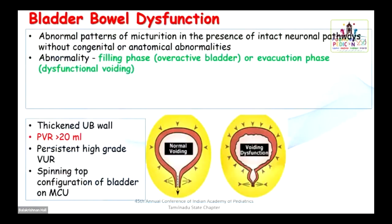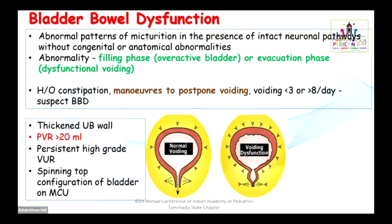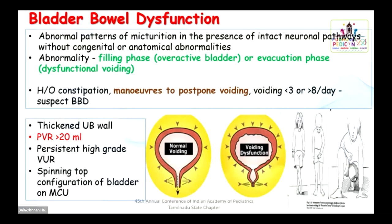A word about bladder-bowel dysfunction (BBD): It is an abnormal pattern of maturation in the presence of intact neuronal pathways without congenital or anatomical abnormalities. It can occur in the filling phase (overactive bladder with frequent urination) or evacuation phase (dysfunctional voiding — bladder and sphincter dyssynergia). It is characterized by thickened urinary bladder wall, significant post-void residue more than 20 ml, persistent high-grade vesico-ureteric reflux, and spinning top configuration of the bladder on MCU. Symptoms include constipation, maneuvers to postpone voiding, and voiding less than 3 or more than 8 times per day.